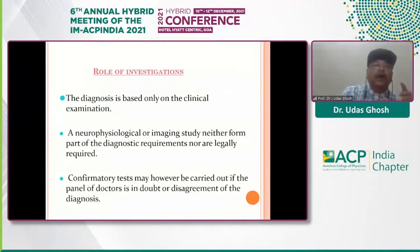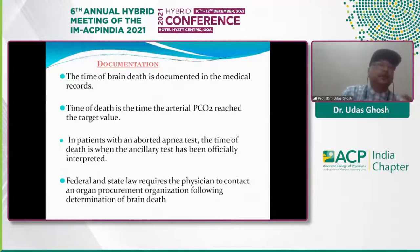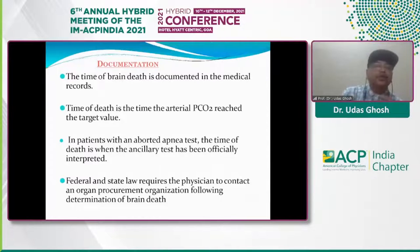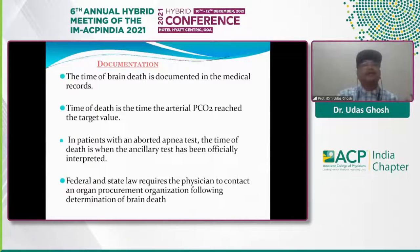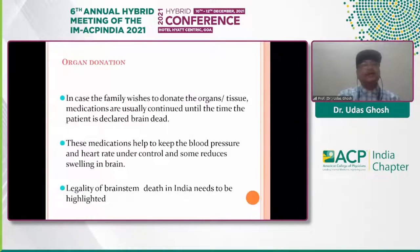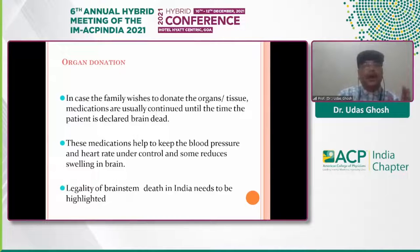After completing the steps, you perform the investigations, and most importantly, you must document everything. The time of brain death is documented in the medical records. The time of death is the time the arterial PCO2 reaches the target value — 60 mmHg or more than 20 above the baseline — and the apnea test is positive. Once brain death is certified, you can inform the family about organ donation. Ventilation and medication should be continued until organs are retrieved, after which the ventilator is withdrawn.